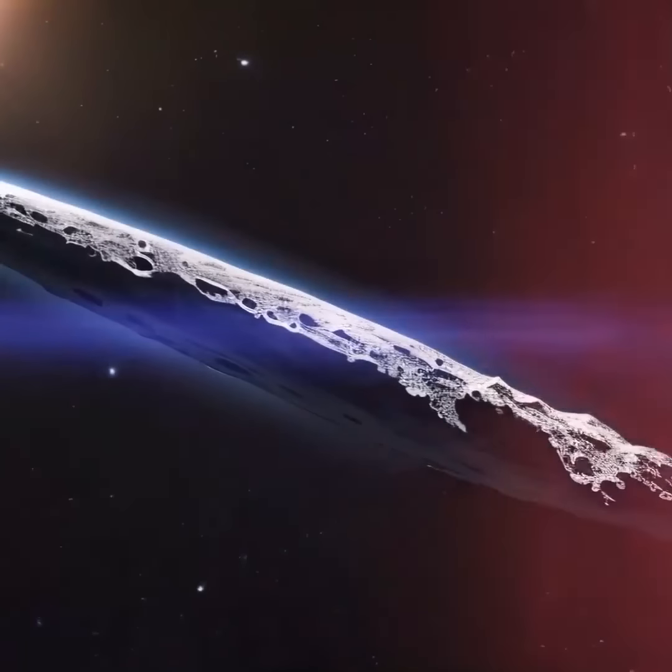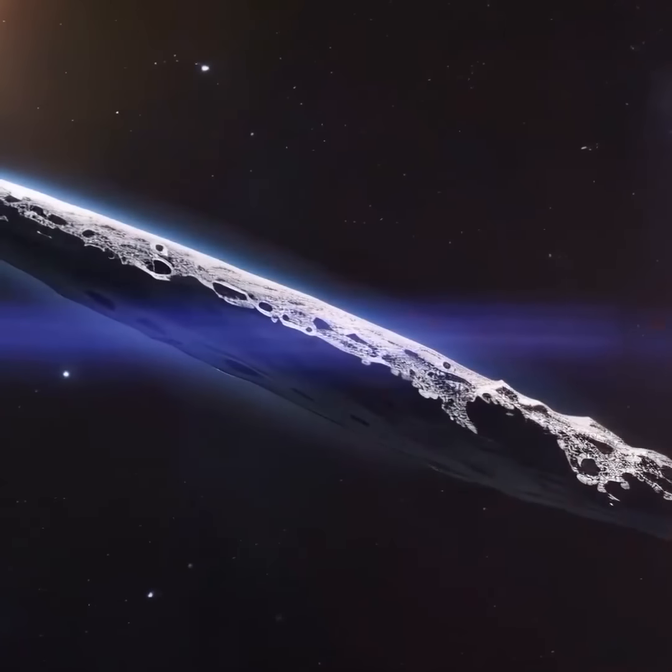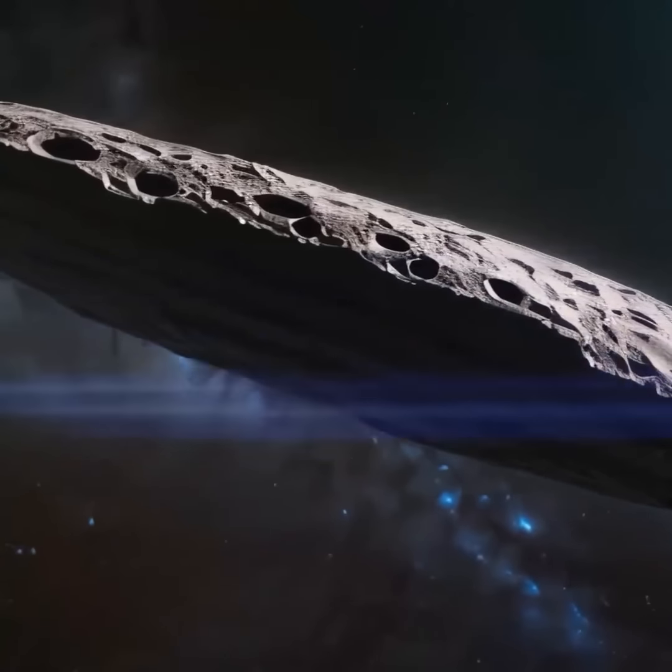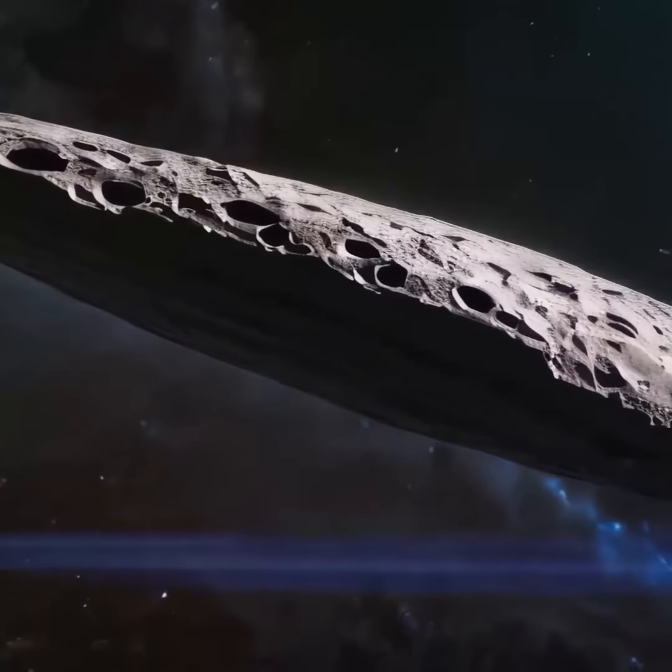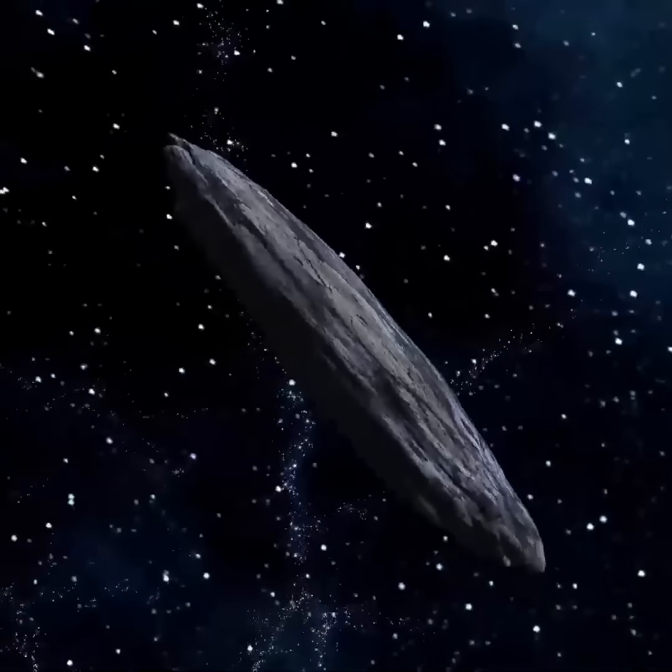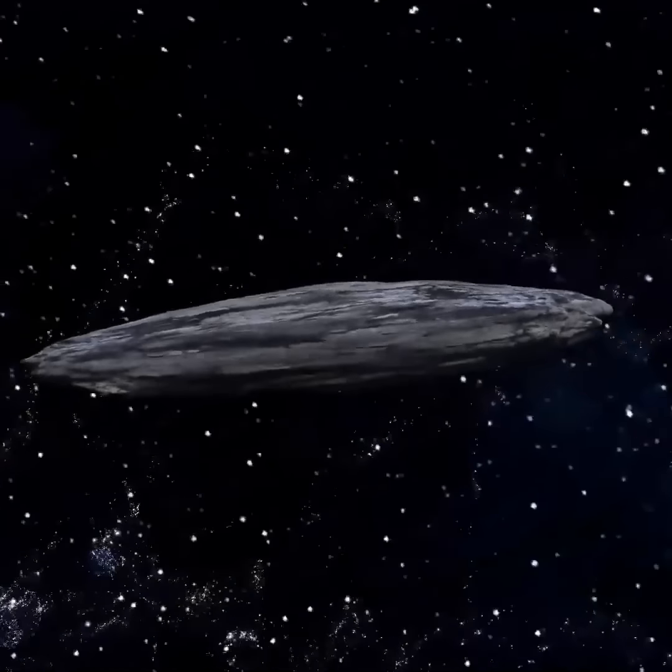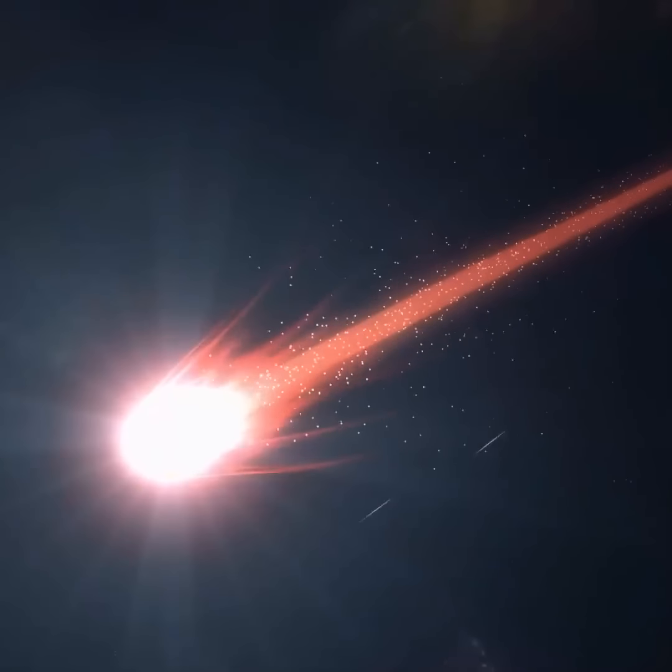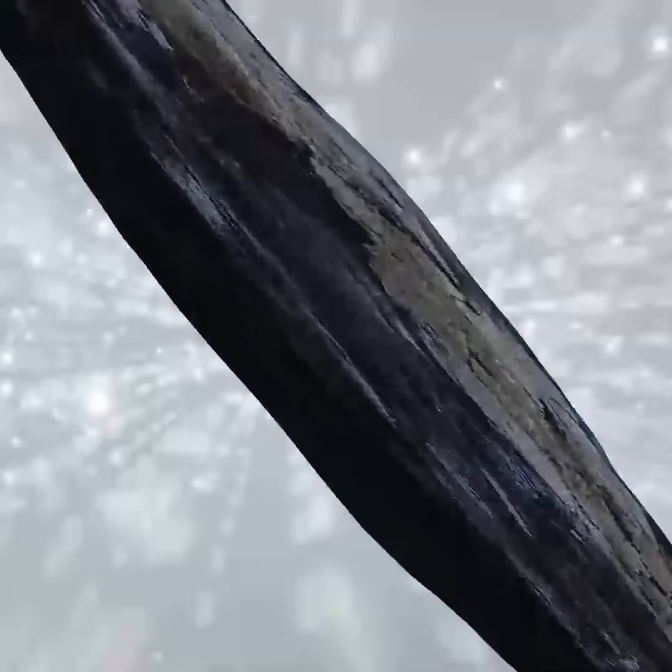By all accounts, Amuamua should be a comet, because it seems to come from a different location in the universe. Yet, it doesn't exhibit the typical signs of cometary activity. Amuamua lacks a tail and does not spew out gas as it passes by, not like me. Even though it behaves like a comet, it looks more like an asteroid.